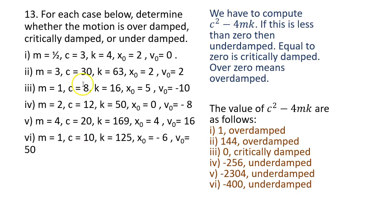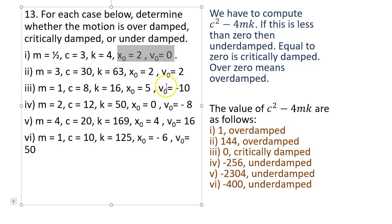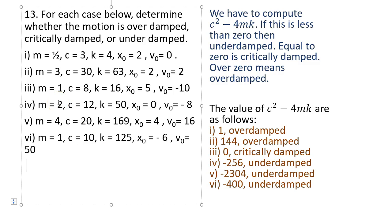Problem 13: for each case below, determine whether the motion is over-damped, critically damped, or under-damped. If you have a mass-dashpot-spring system with mass m = 1/2 kg, c = 3 N·s/m, and k = 4 N/m, you need to determine the damping type. The initial position and velocity don't play any role in whether the system is over-damped or under-damped. To determine damping, you compute c² - 4mk.